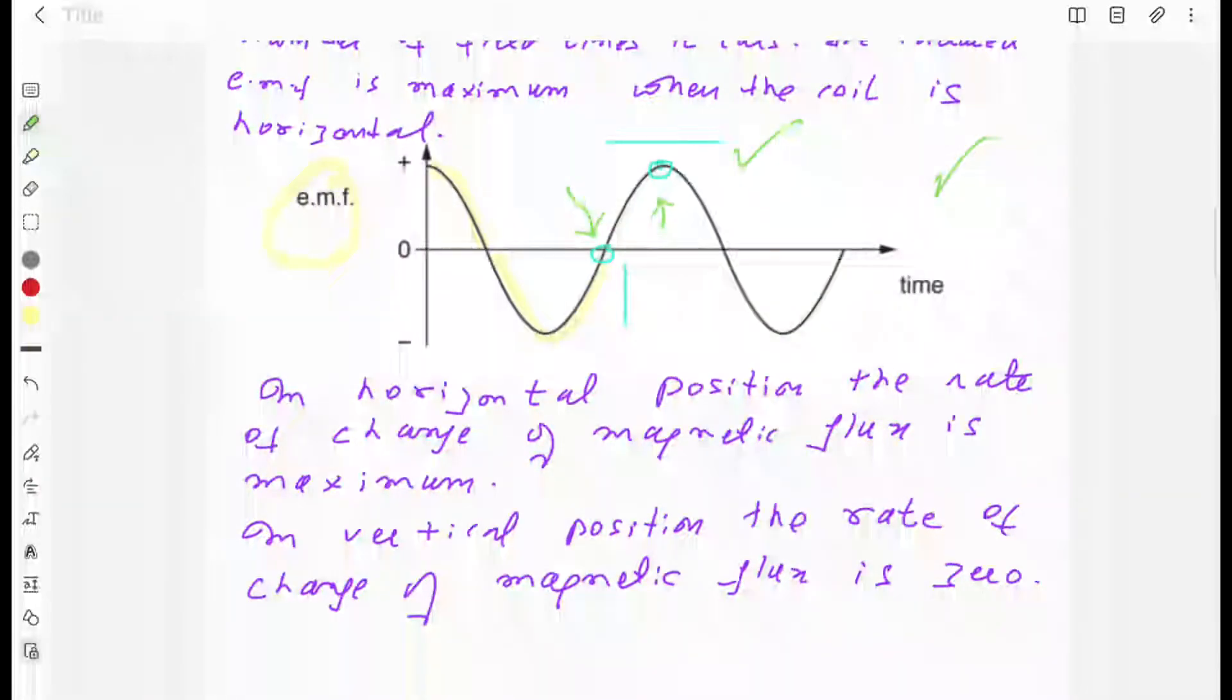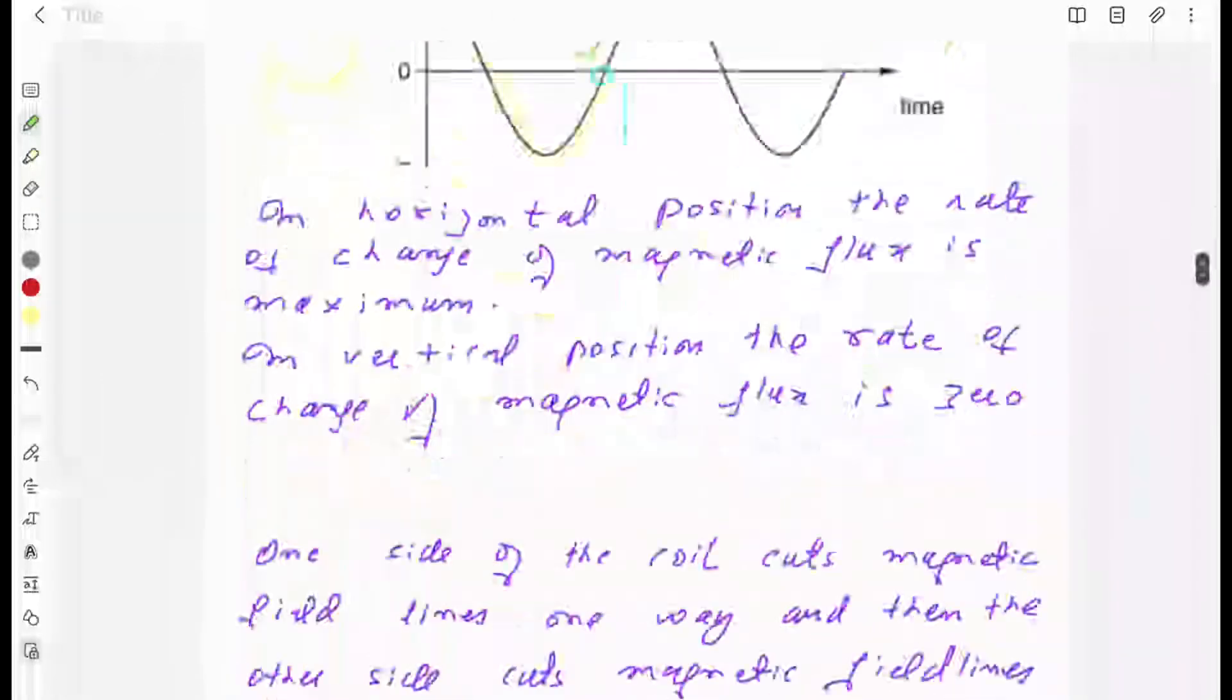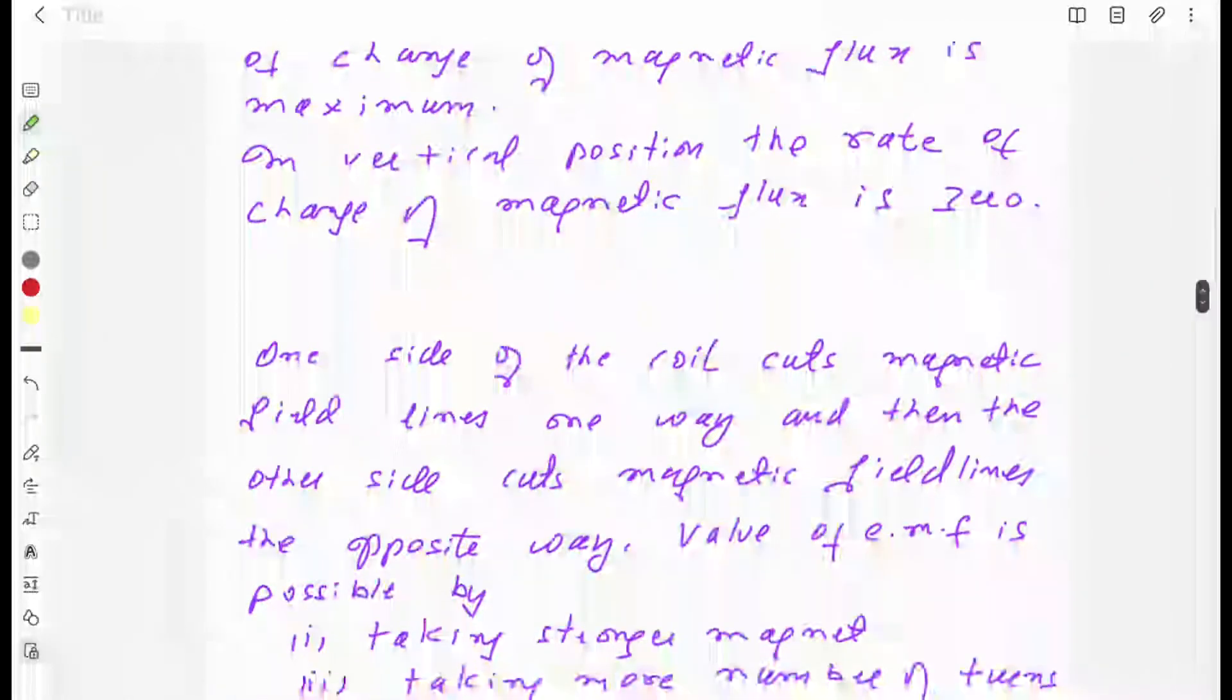In vertical position, the rate of change of magnetic flux is zero. One side of the coil cuts the magnetic field lines one way, and then the other side cuts the magnetic field lines the opposite way. So you have positive and negative values of EMF.